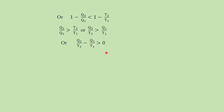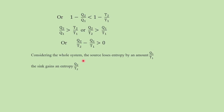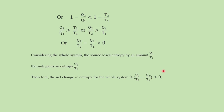If we take the whole system of the irreversible cycle, the source loses an amount Q1 by T1 and the sink gains an amount Q2 by T2. Therefore, the net change in entropy for the whole system, which is Q2 by T2 minus Q1 by T1, is greater than zero. The net change is positive. Thus, we see that in an irreversible cycle there is always a gain of entropy — dS is greater than zero.